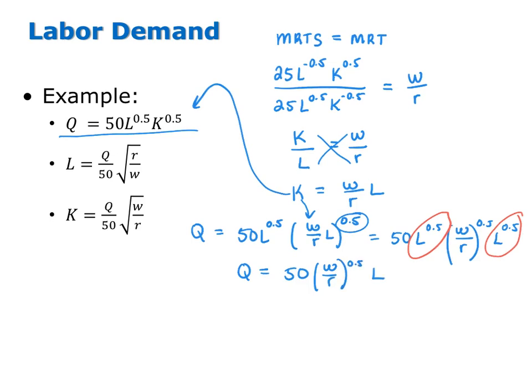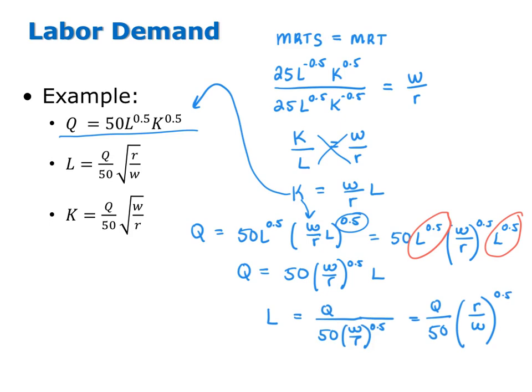So Q equals 50 times W over R to the 0.5 times L. Solving for labor gives L equals Q over 50 times W over R to the 0.5, which is equivalent to Q over 50 times R over W to the 0.5. This is an equation that tells us the cost minimizing amount of labor the firm will demand for any values of the wage rate, the rental rate, and the level of output.